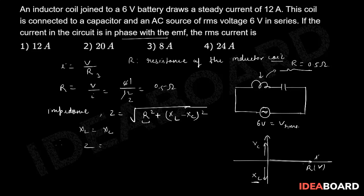So if you put this value, that gives you Z is equal to square root of R squared plus (XL minus XL) squared, which gives you nothing else but R. That means impedance is equal to 0.5 ohm only.